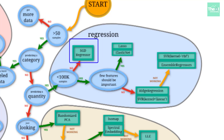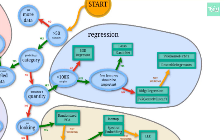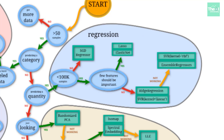Otherwise, we check one more condition — whether only a few features should be important from a prediction point of view. If that's true, we choose algorithms like Lasso or ElasticNet. Otherwise, we pick algorithms like ridge regression or SVR with the kernel defined as linear. SVR stands for support vector machine regression, and kernel equals linear means the graph will be a straight line.